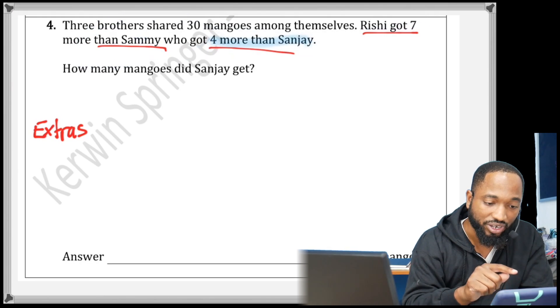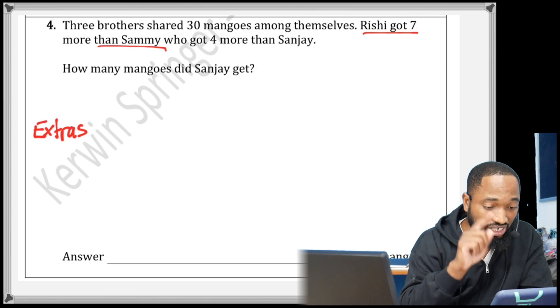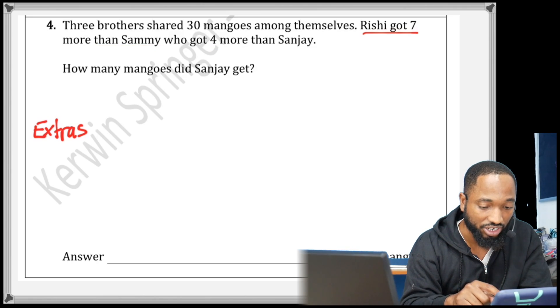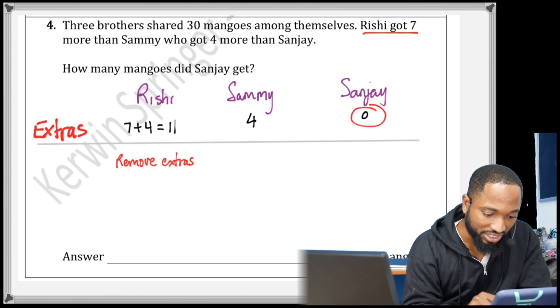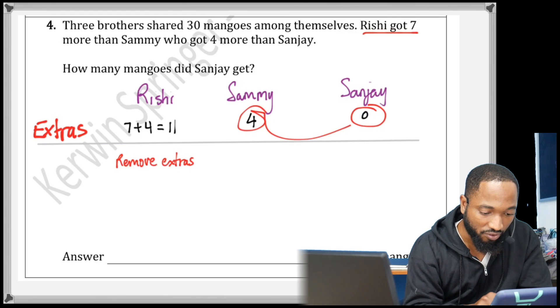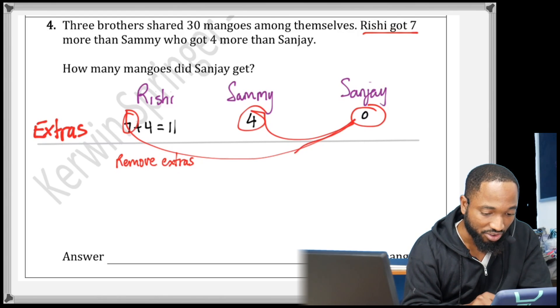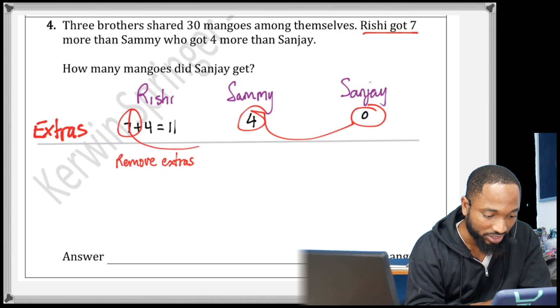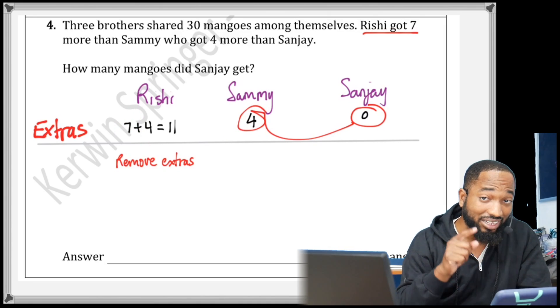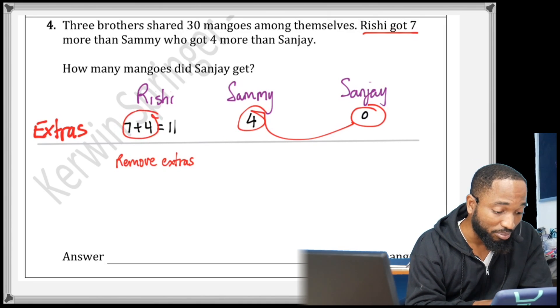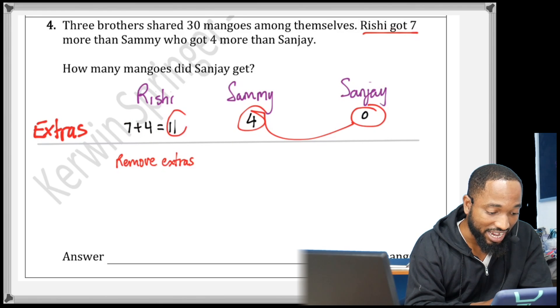And Rishi got 7 more than Sammy. So when you're arranging the extras you need to think really carefully if the question pops like this. Sanjay got zero extra. Sammy got 4 extra than him. And Rishi got 7 extra than Sammy, so really and truly Rishi got 7 plus 4—he got 11 extra.